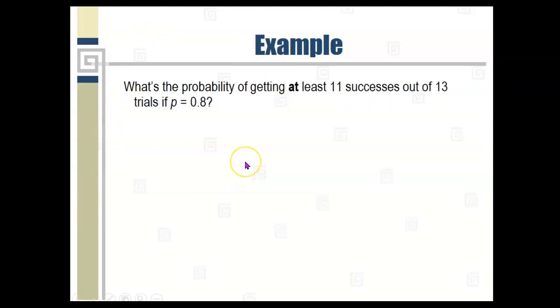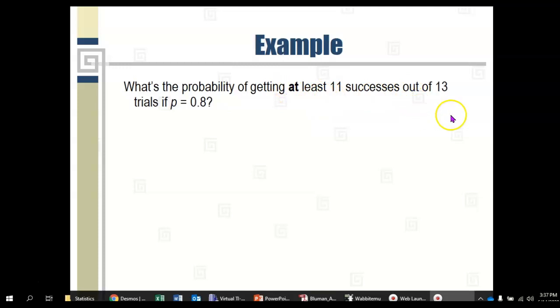What's the probability of getting at least 11 successes out of 13 trials if P is 0.8? Now, this is a different question because we've got the words at least in there. We don't want to know just the probability of getting exactly 11 successes. We want to know what's the probability of getting at least that many. We want to know what's the probability that the number of times whatever it is happens out of 13 times that it could happen would be at least 11, which means it could be 11 or it could be more than that. It could be 12. It could be 13.